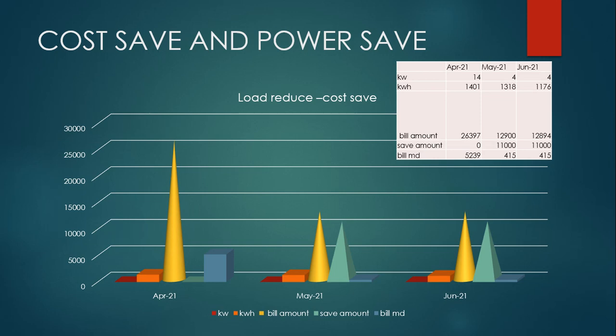The second month is May. May is also the same calculation. But KW is now 4, because of application changes from the previous months. May is the conversion. KW is 4, KWH is 1,300, billing amount is 12,900, save amount is approximately 11,000 plus or minus 1%, and billing MD is 450.